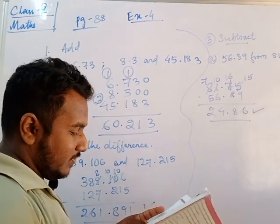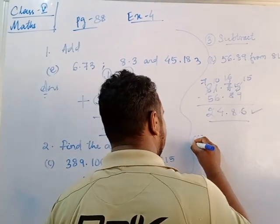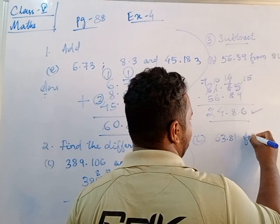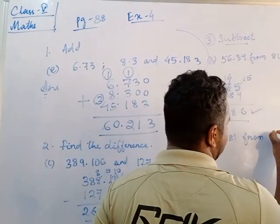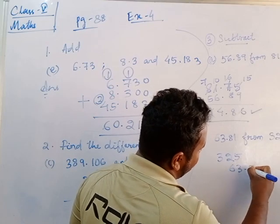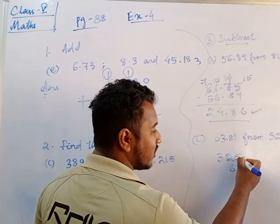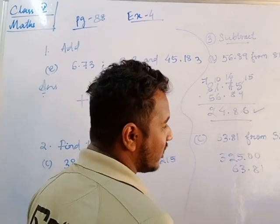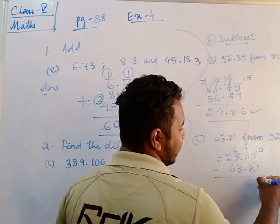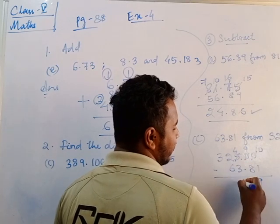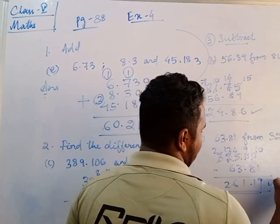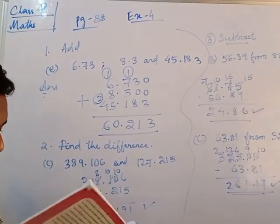One more: C number question — 63.81 from 325. Write 325 on top, then 63.81 below. Since 325 has no decimal, put the point and write 325.00. Borrow as needed — this becomes 10, this becomes 9, this becomes 4. 10 minus 1 is 9, 9 minus 8 is 1, then 4 minus 3 is 1, 12 minus 6 is 6, then 2. The answer is 261.19. Same method for F number.